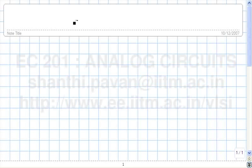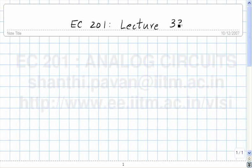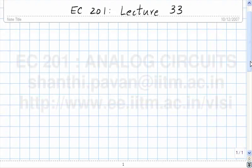This is EC201 lecture 33. So far we have seen 4 active devices: the bipolar transistor, with the NPN and PNP variants, and the MOS transistor, the NFET and the PFET. The corresponding complementary devices let us do attractive things like make active loads. The only piece of the puzzle still left is the so-called ideal op-amp.